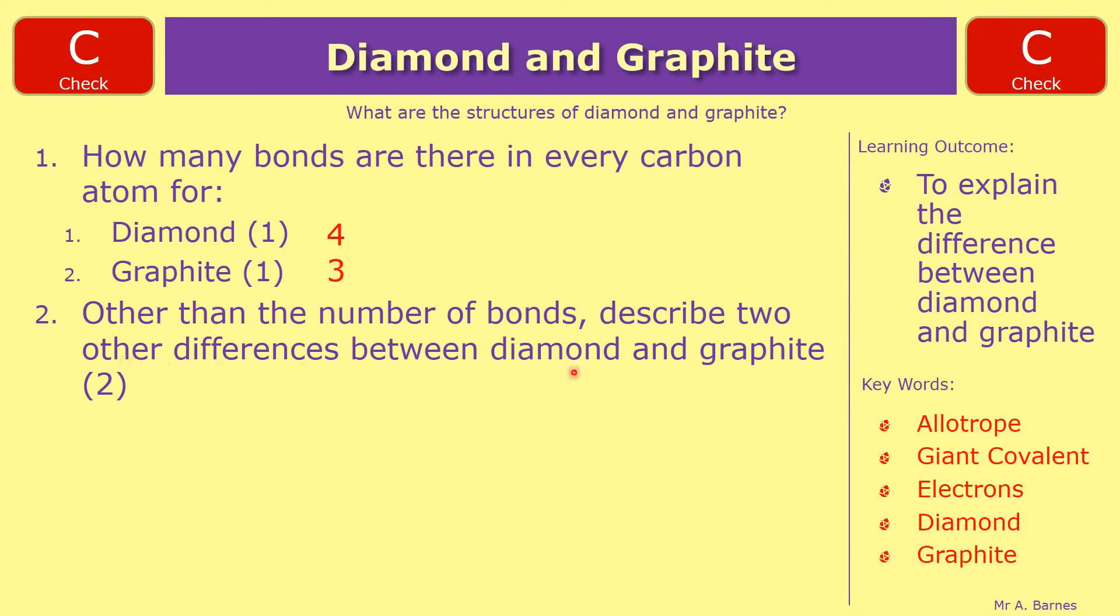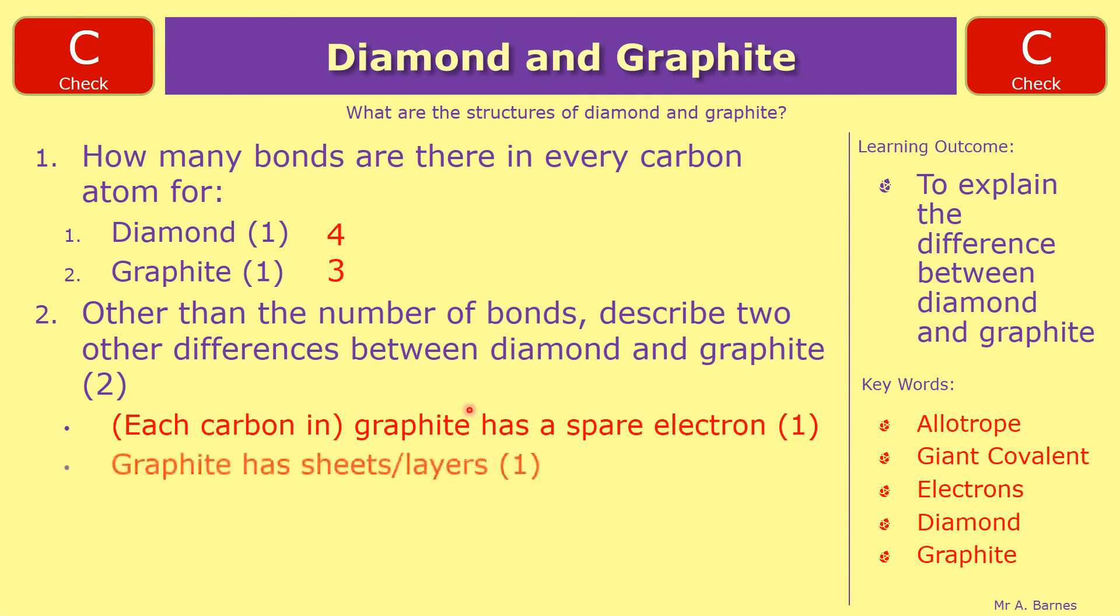And then for the second question, describing the two differences, key things are mainly focusing on graphite. Every carbon atom in graphite has a spare electron and graphite has sheets or layers. And you could have had the reverse argument. You could have turned around and said diamond does not have any spare electrons or diamond does not have any layers.